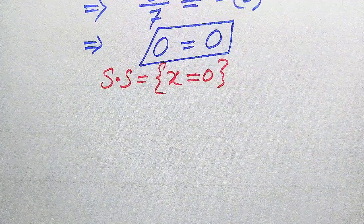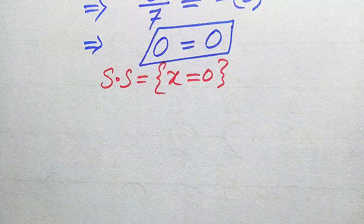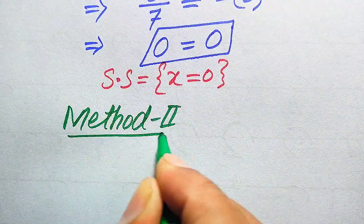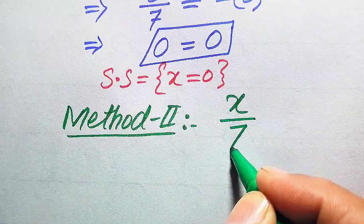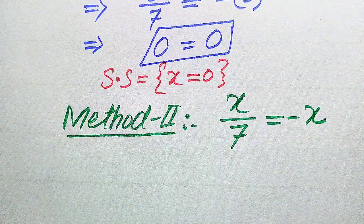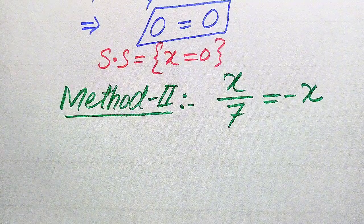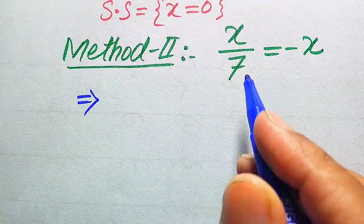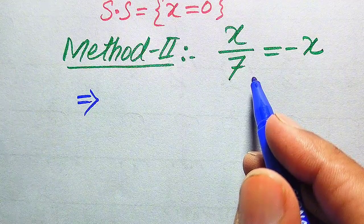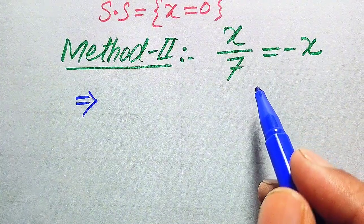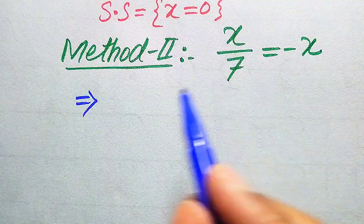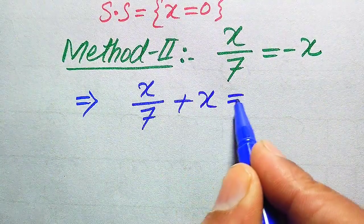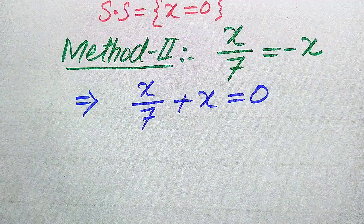Now we solve this problem using the second method. The given equation is x divided by 7 equals minus x. In Method 2 we use a different approach. This is a linear equation, which means it has only one root. We use the LCM technique: moving minus x from the right hand side to the left hand side gives x divided by 7 plus x equals 0.